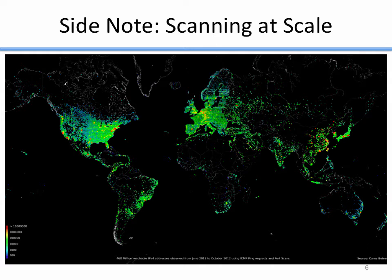When they ran their scan, there were 460 million reachable IP addresses found. They scanned 460 million individual computers between June 2012 and October 2012. The map shows the density and location of all those computers — more computers in more densely populated areas, as you'd expect. To figure out the geographic distribution of active computers online, you actively scan the entire internet. NMAP really is a very powerful tool that can be used in very powerful ways.